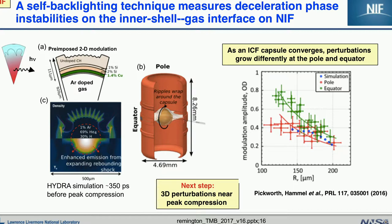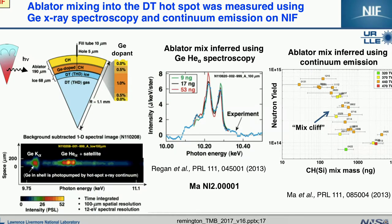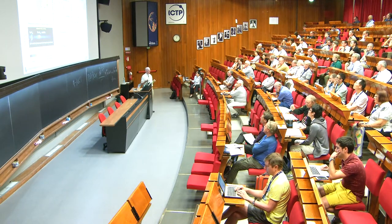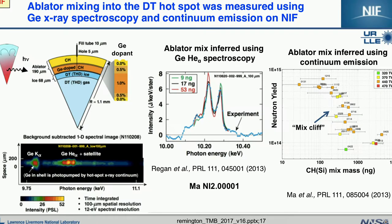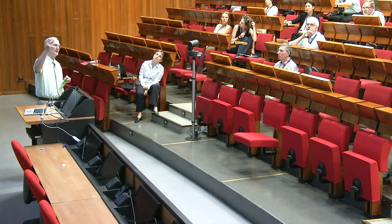This allows us to measure perturbation growth at the inner surface — the inner shell-gas interface — which is otherwise hard to access. We use the x-ray source from the hot spot gas itself. For several years there was a big debate among the theory, simulation, and experimental communities about whether or not we were getting capsule shell material mixed down into the hot spot. We had a national ignition campaign with milestones to meet, and a lot of tension about whether to stop and do more careful science experiments or just keep doing performance experiments.